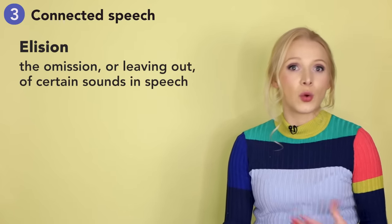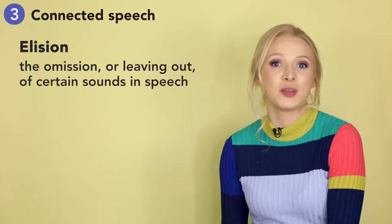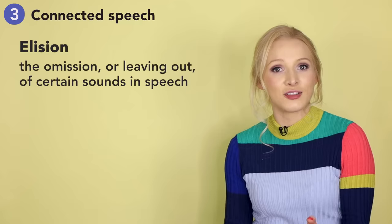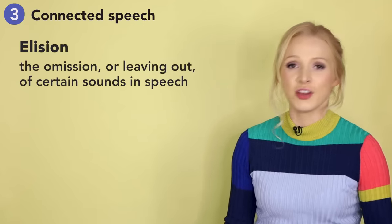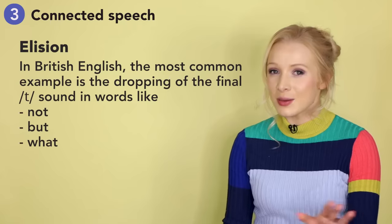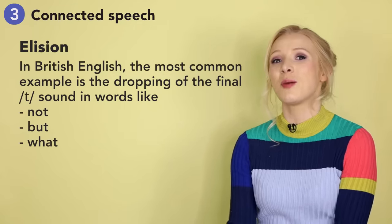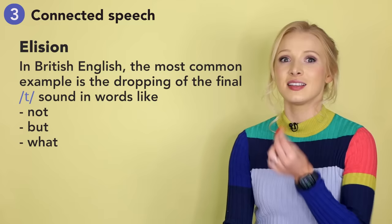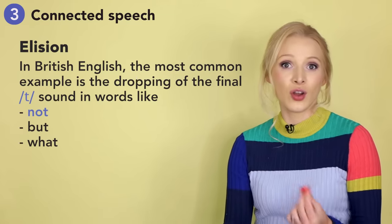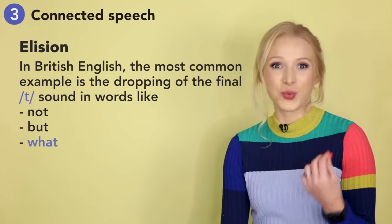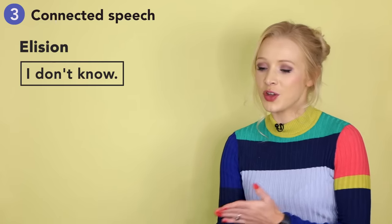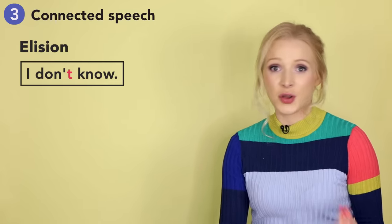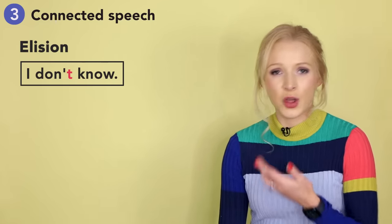We'll start with elision. Elision is the omission of certain sounds in speech, often to make pronunciation more efficient and fluid. In British English, the most common example is the dropping of the final sound in words like 'not,' 'but,' and 'what.' For example, 'I don't know' might be pronounced as 'I dunno' — no t-sound to be found there.